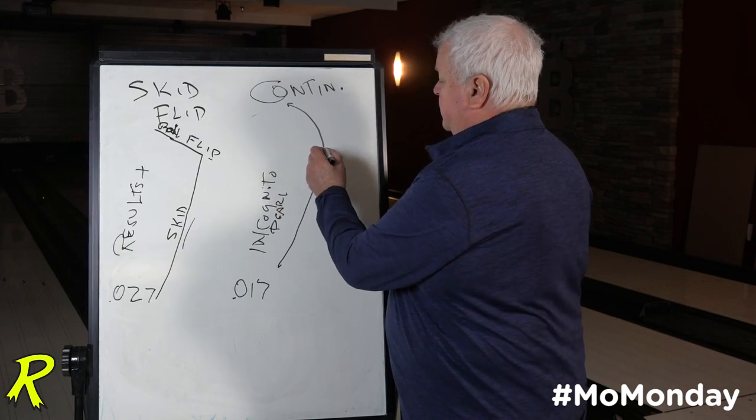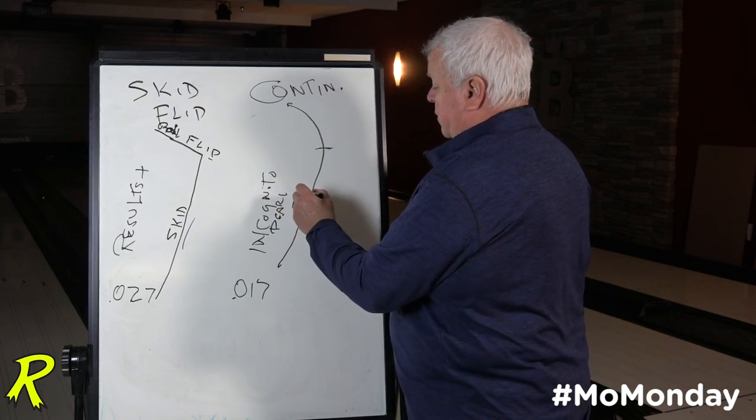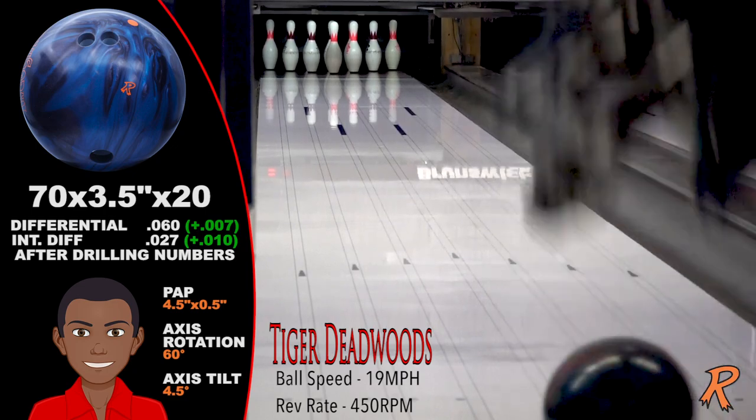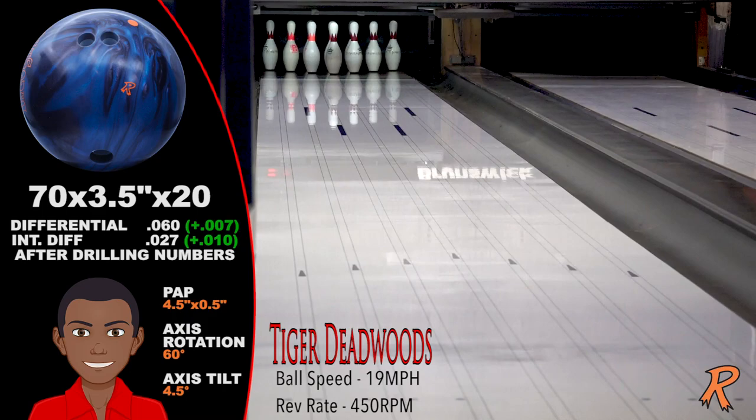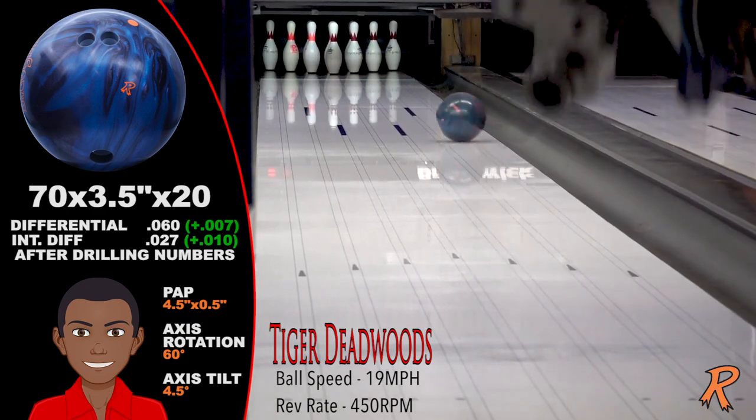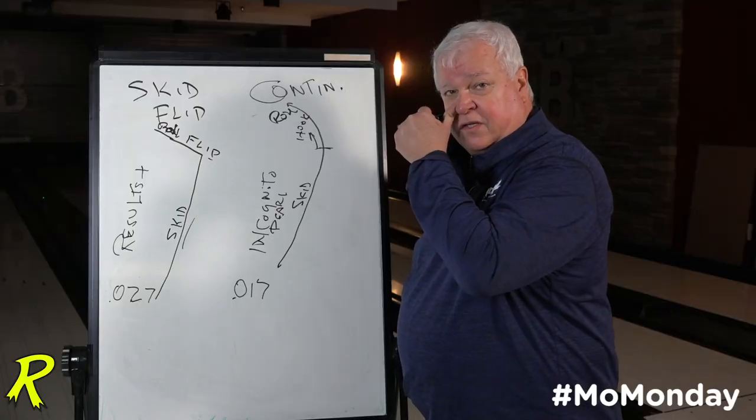But once they come off the spot, the transition from skid to hook to roll is more gradual here, and therefore continues more through the pins. There's more energy. It retains its axis rotation a little bit longer.